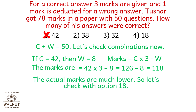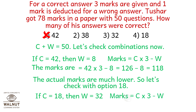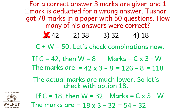The actual marks are much lower, so let's check with option 18. If C is 18, then the wrong answers are 32. Marks equal correct into 3 minus wrong, with negative marking of 1 mark per wrong answer. The marks are 18 into 3 minus 32, which is 22. So option number 4, 18, is wrong too.